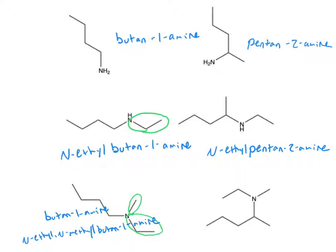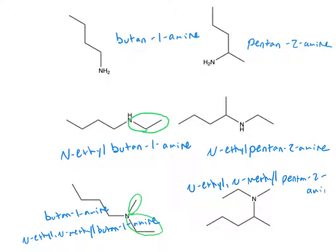In our last example, we can see that we once again have five carbons in our main chain. Our amine is attached to our second carbon, so we have pentan-2-amine. And we once again have that same ethyl and methyl substituent coming off of our nitrogen, leading us to a final name for this compound of N-ethyl-N-methyl-pentan-2-amine.